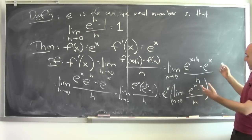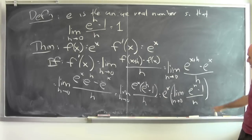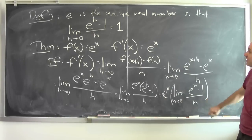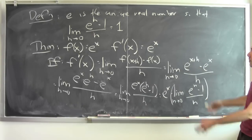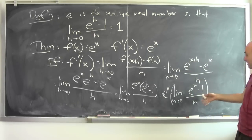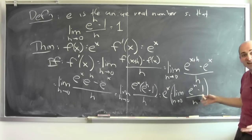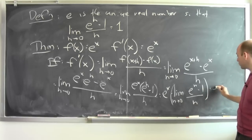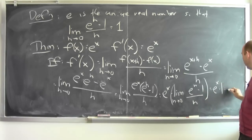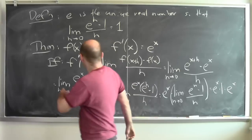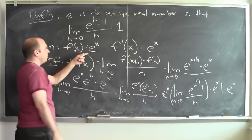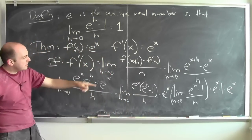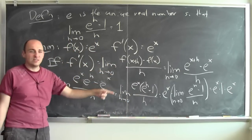But this limit does exist, because e is the unique real number so that this limit exists and is equal to 1. So this is really e to the x times 1, which is e to the x. And that proves that the derivative of e to the x is e to the x.